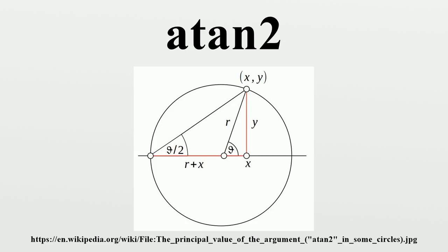The one-argument arctangent function cannot distinguish between diametrically opposite directions. For example, the anticlockwise angle from the x-axis to the vector (1,1), calculated in the usual way as arctan(1/1), is π/4 or 45 degrees. However, the angle between the x-axis and the vector (-1,-1) appears, by the same method, to be arctan(-1/-1), again π/4, even though the answer clearly should be -3π/4 or -135 degrees.